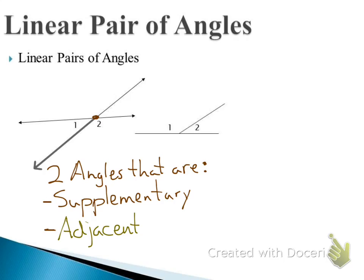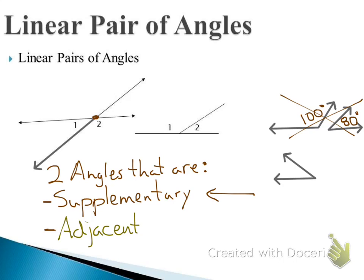When we see a linear pair, we're typically going to be solving with them. We know they are supplementary, so if I gave you angle 1 and wanted you to find angle 2, you'd use the fact that they add up to 180. An example of angles that would not be a linear pair: if I had 100 and 80, they're supplementary but not adjacent — not a linear pair. Or two adjacent angles that are not supplementary — also not a linear pair.